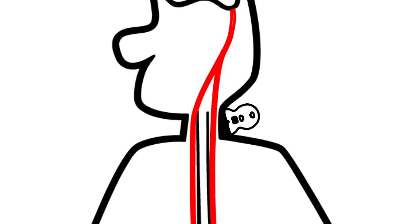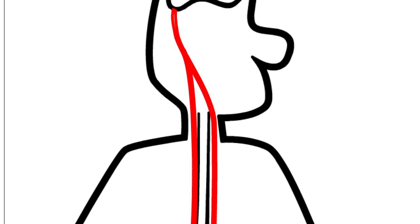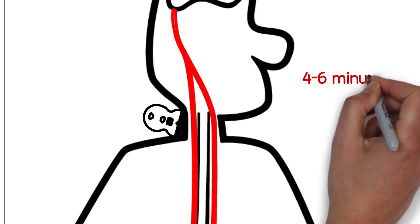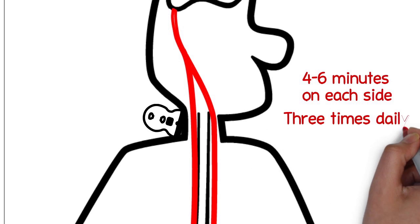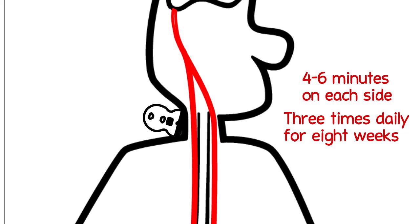Because there is a vagus nerve on the left and the right, both sides are treated. The duration of each treatment varies from four minutes on each side to six minutes on each side, and the treatment is repeated three times daily for a total course of eight weeks.